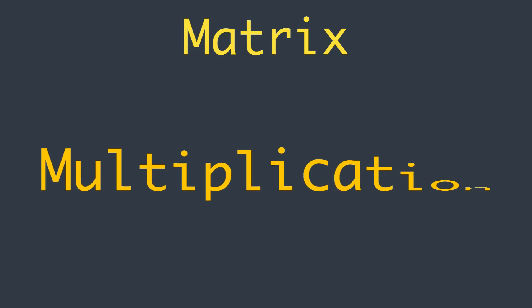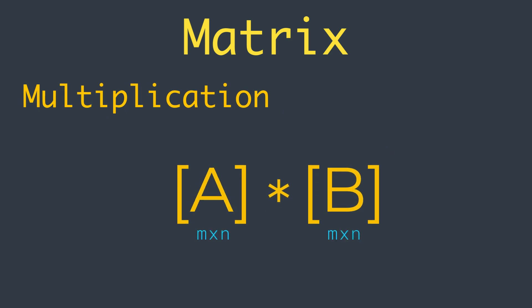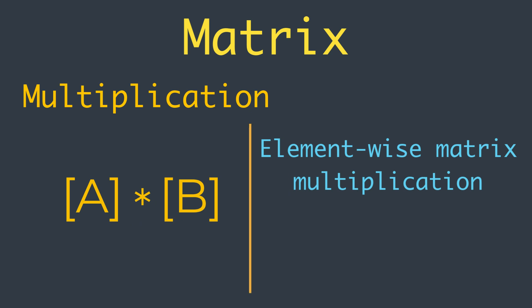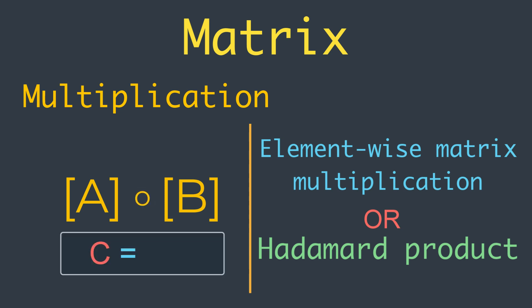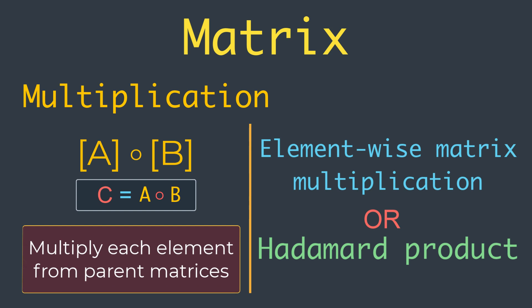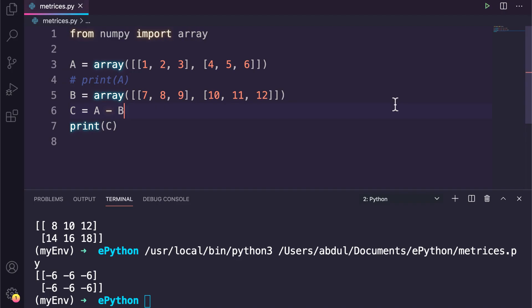Now let's take a look at matrix multiplication. Two matrices with the same size can be multiplied together, and this is often called element-wise matrix multiplication or the Hadamard product. It is not the typical operation meant when referring to matrix multiplication, so a different operator is used — a small circle, such as C equal to A ∘ B. Element-wise multiplication involves multiplying elements from each parent matrix to calculate the values in the new matrix. We can implement this in Python using the star operator directly on the two NumPy arrays.